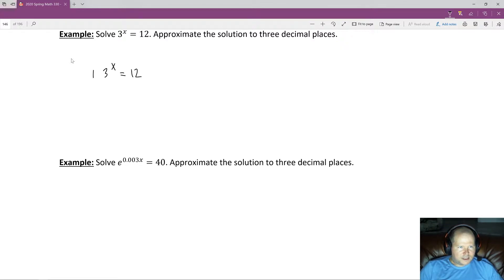One way that we can do that is we can take a natural log. But whatever we have to do, we have to do to the other side. Whatever we do to one side, we do to the other. This would allow us to bring this exponent x down to the front.